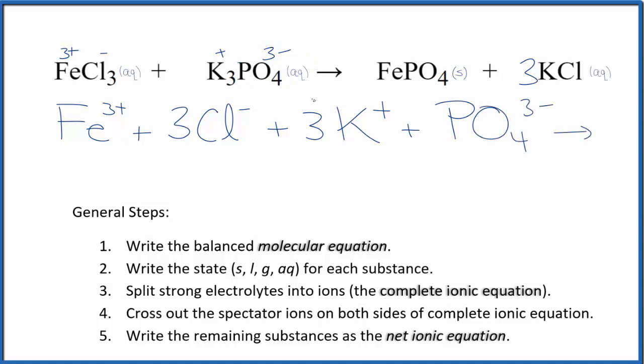These are the reactants in our net ionic equation. For the products, we don't split solids apart in net ionic equations. This FePO4, this is a precipitate, it's the solid, so we're going to keep that together as FePO4.